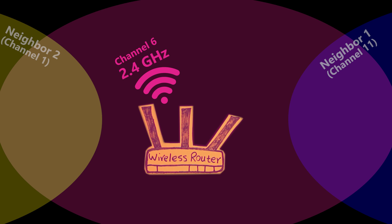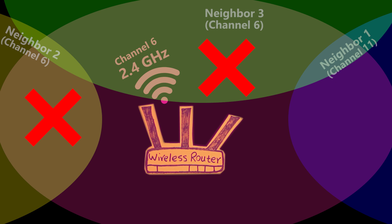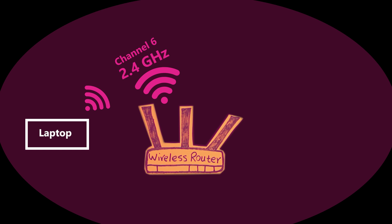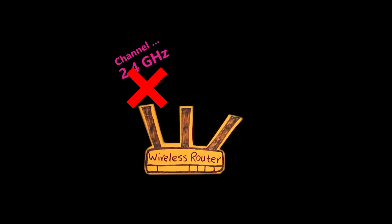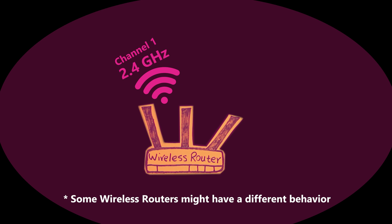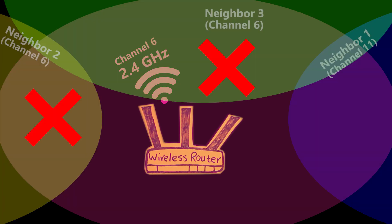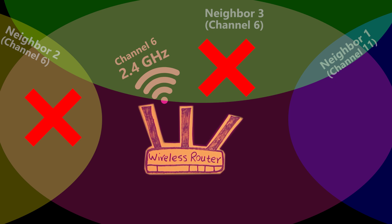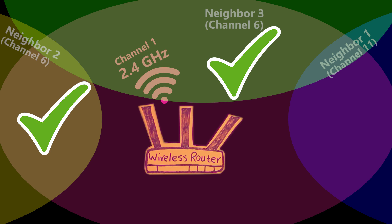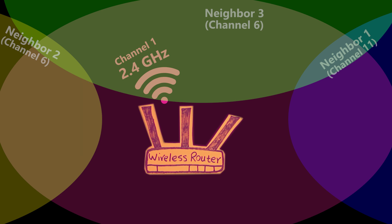But conditions can change fast — a neighbor might change their channel, or a whole new wireless network might appear. If the router scans and switches to a new channel while I'm connected, I get disconnected until the new channel is broadcast and my device reconnects. That's why routers usually only change the channel when no wireless clients are connected, so nobody gets disconnected. If that condition never occurs, they keep using the same channel until someone reboots the router — which is why rebooting can sometimes fix wireless problems, even if only temporarily.